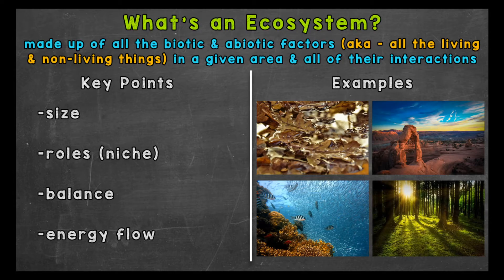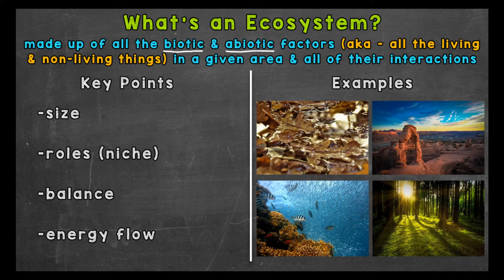First, we'll start with what an ecosystem is. An ecosystem is made up of all the biotic and abiotic factors, a.k.a. all the living and non-living things in a given area, and all of their interactions. So basically, all the organisms together with their physical environment. Every factor in an ecosystem, whether biotic or abiotic, is important to the health and balance of that ecosystem.